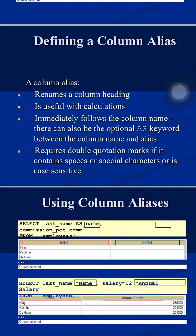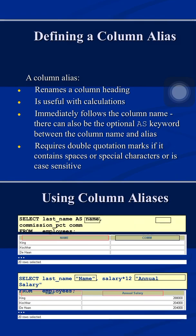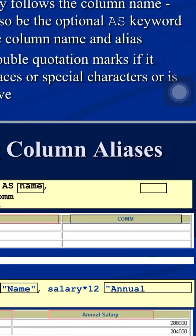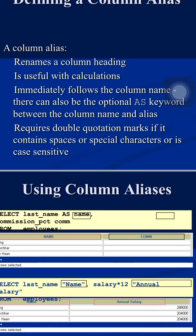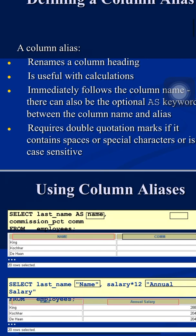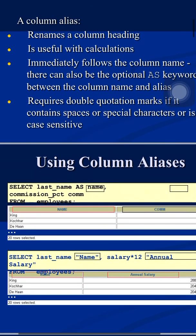For example: SELECT last_name AS name FROM employees — instead of last_name, the column header shows 'name'. The AS keyword is optional; you can just write the alias directly. By default, aliases are displayed in capital letters. If you want to preserve the exact case of your alias, or include spaces or special characters, enclose the alias in double quotation marks — for example "Annual Salary" with a space inside double quotes.